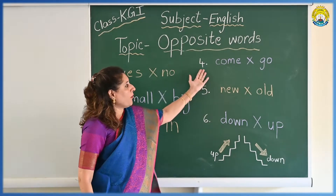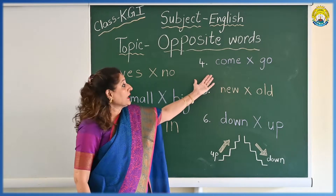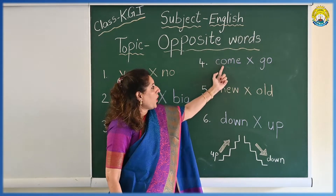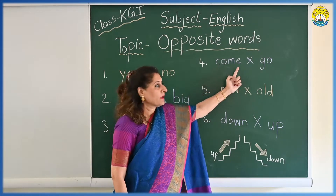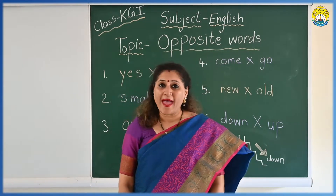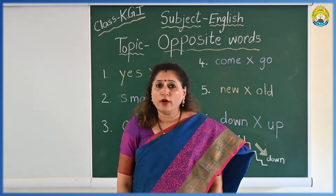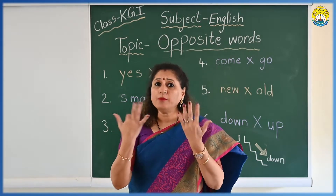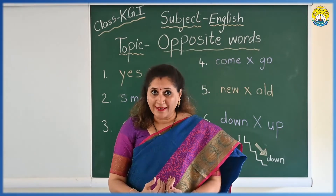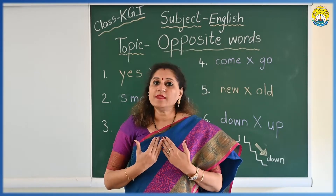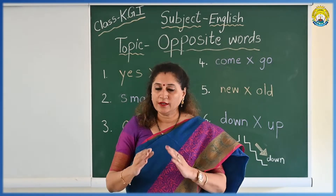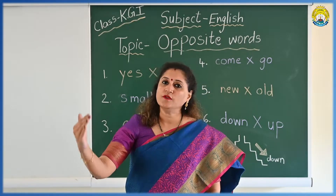Now the next opposite word is come and go. C, O, M, E — come. G, O — go. Children, whenever your parents call you, they say come here, child — come near to me. So you go to your parents, near to your parents. That is come. And when they say okay, go back to your place and sit, so you will go back and sit in your place.